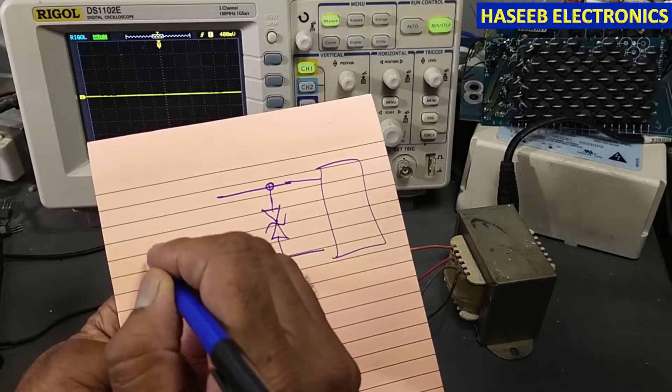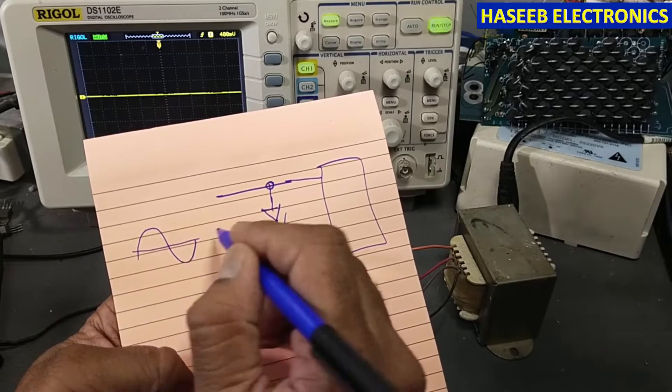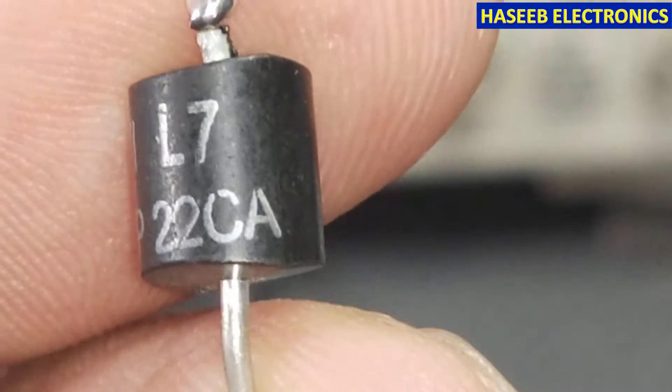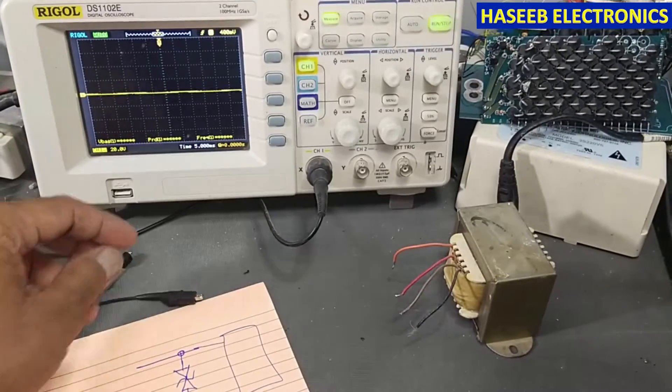We will apply a signal here. Its part number is 5 KP 22 CA, which means it is a 22-volt device, and its clamping voltage or breakdown voltage is 24 to 26 volts.